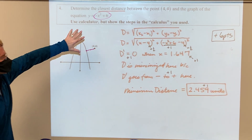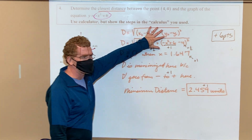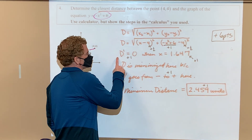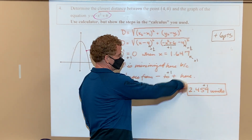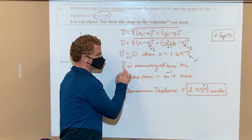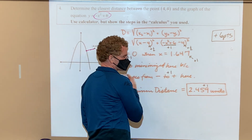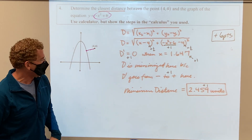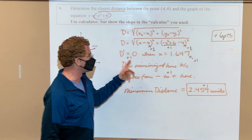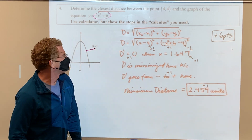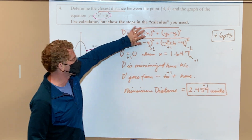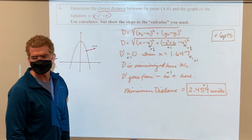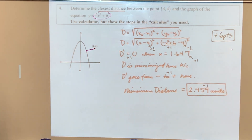There are some people every year that don't know how to set up the equations, but they still go: the derivative equals zero, and x equals blank; D is minimized because d prime goes from negative to positive. They still steal one or two points. And sometimes they can even get partial credit out of some of this stuff. So do that if it comes down to it.